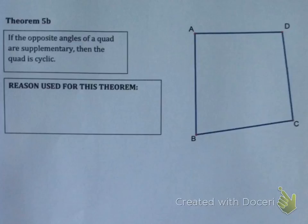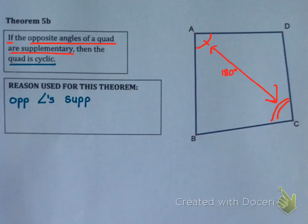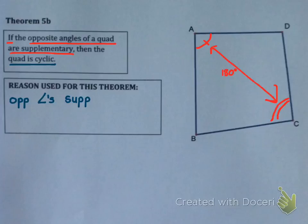Now let's look at Theorem 5b. Theorem 5b is the converse of Theorem 5a. It says if the opposite angles of any quadrilateral add to 180 degrees, then that quad is cyclic. If A and C add to 180, or if B and D add to 180, then the quad is cyclic. The reason used is: opposite angles supplementary. Note: you can't say 'opposite angles of cyclic quad' because you're trying to prove it's a cyclic quad. This is the second way to prove something is cyclic — the first way was Theorem 4b, using angles in the same segment.